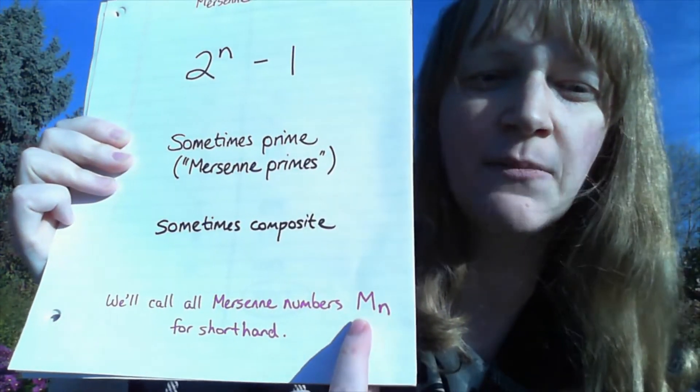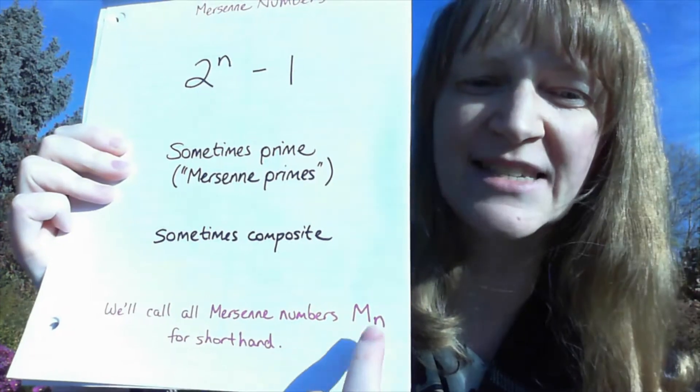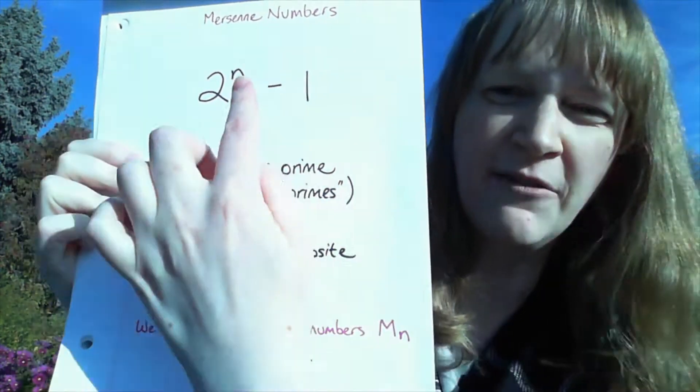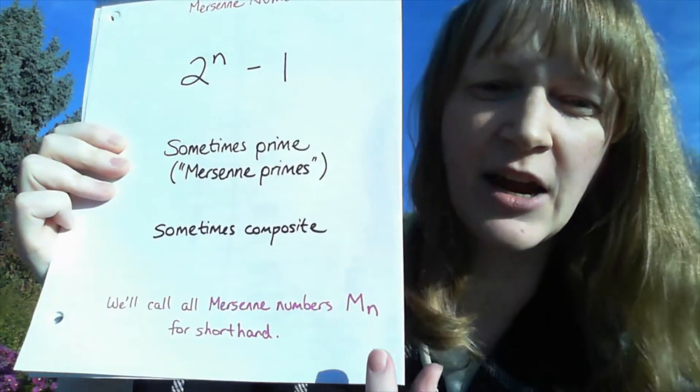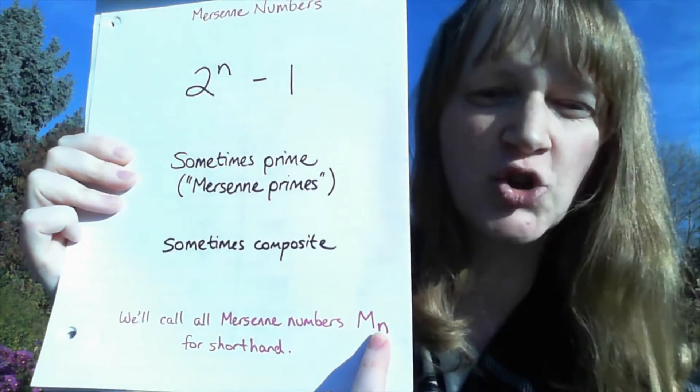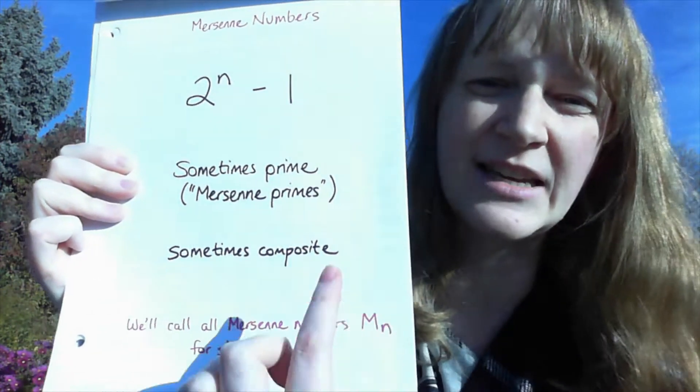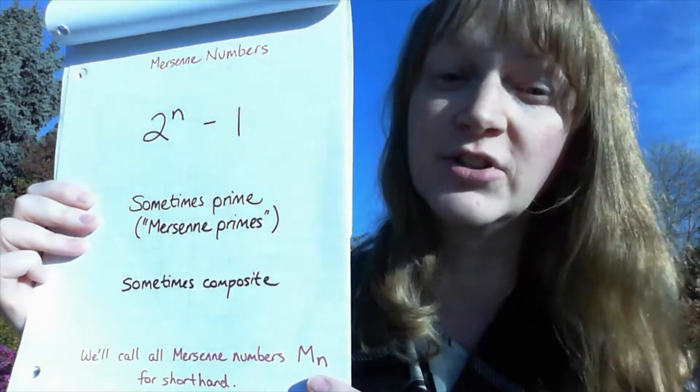We'll write them as a capital M with a lowercase n, and then whatever exponent we fill in here, we can just put there. That'll be a nice shorthand to be able to see which exponent it is because that's a really helpful defining feature.